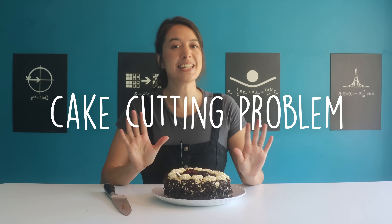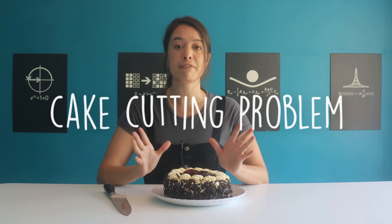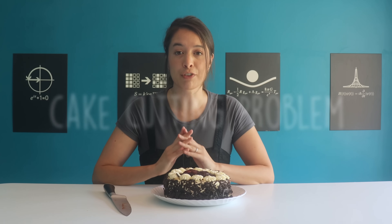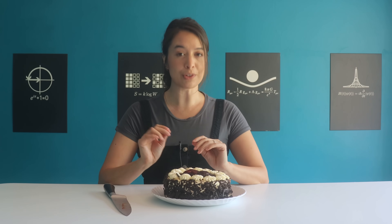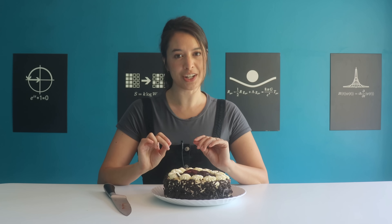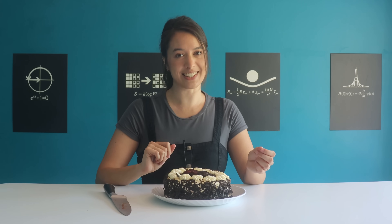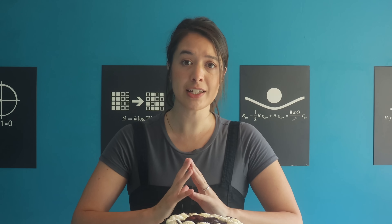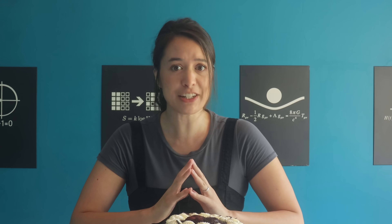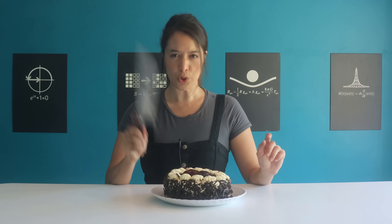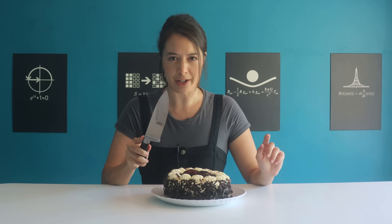Known as the cake cutting problem, it's famous in a branch of computer science called Fair Division, which explores algorithms for mathematical fairness. So if you were never good at sharing, don't feel bad — turns out sharing is mathematically difficult. So what is the fairest way to cut a cake? Why is it so complicated, and why do we care?